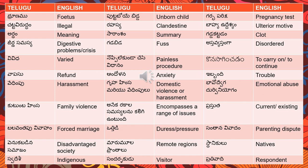'Emotional abuse' — bhavodvega durvye vaharam, or simply durvye vaharam, or durvye niyogam — both are fine. 'Family violence' — kutumba himsa; violence means himsa, so kutumba himsa.